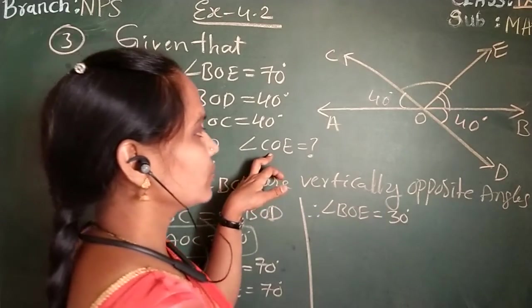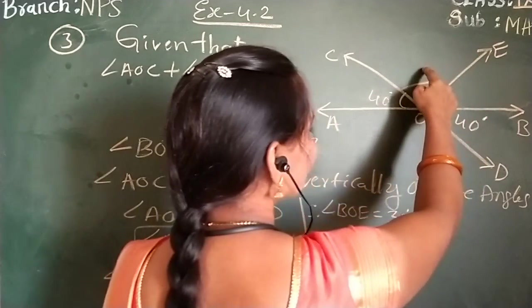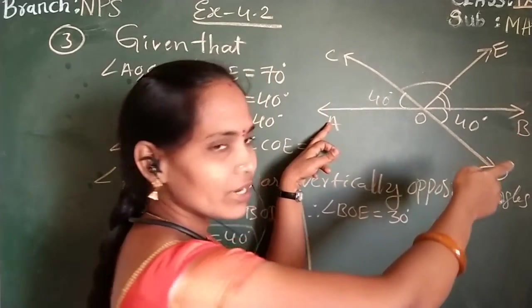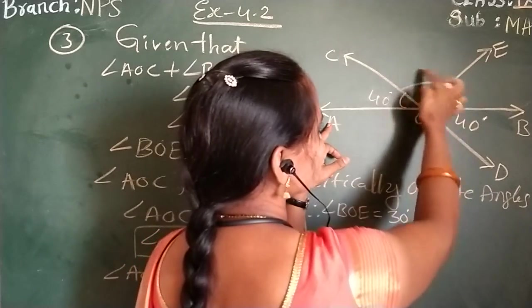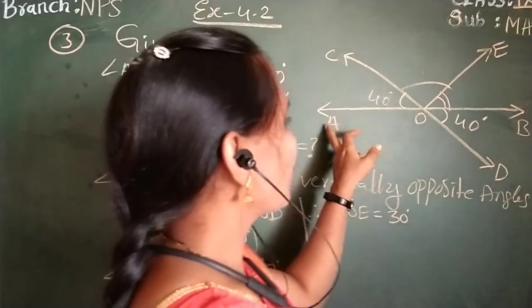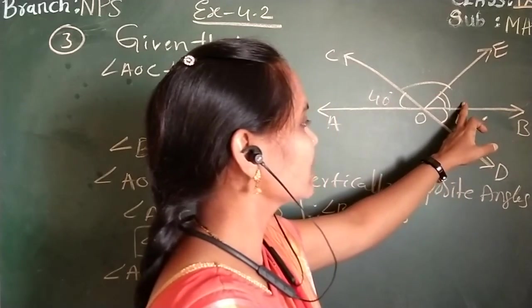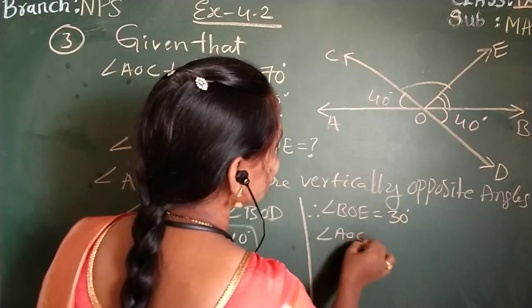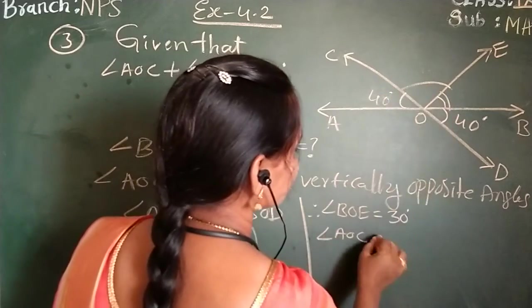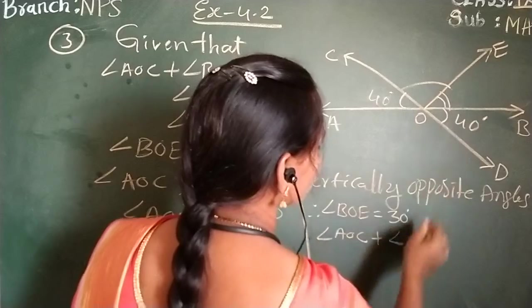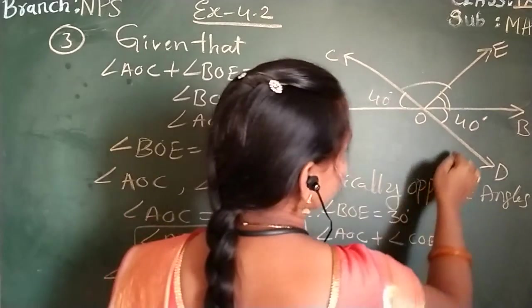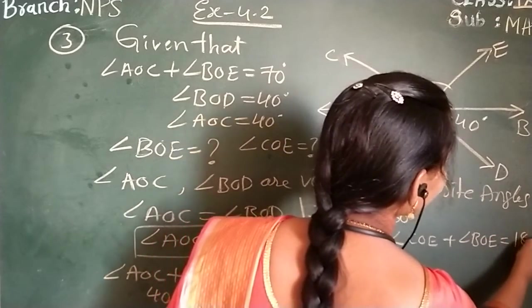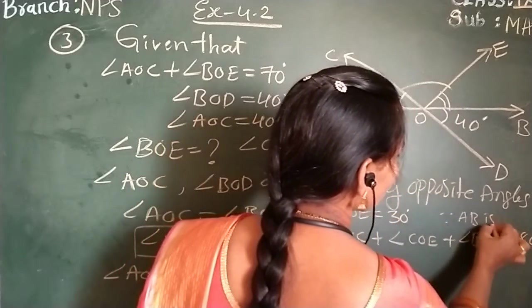Now, what about angle COE? This angle we need to find out. How you can get it? Once look at the figure, AB is a line. Straight line angle 180 we have. So, sum of these three angles we should equate to 180 degrees. Why? Because on the straight line sum of all angles we can consider as 180 degrees. So, angle AOC plus angle COE plus angle BOE equals 180 degrees, since AB is a line.